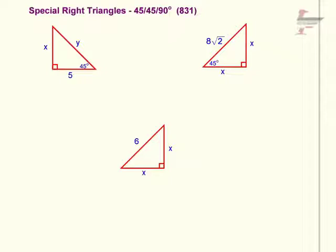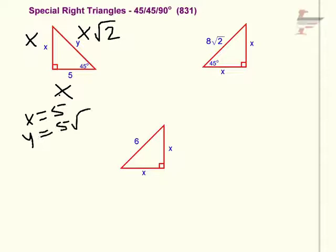So on the first triangle upper left I'm going to make the 5 an X and we already have an X on this side and the third side is X root 2. So in this case 5 is equal to X so we're going to have X equals 5 and our Y is going to be equal to X root 2 which would be 5 root 2.